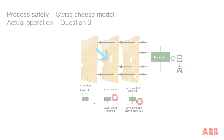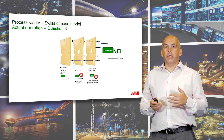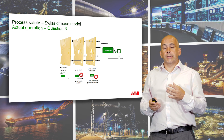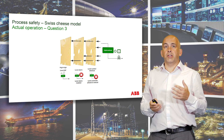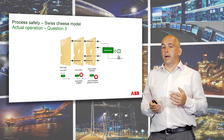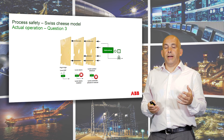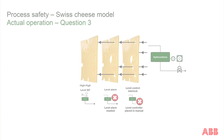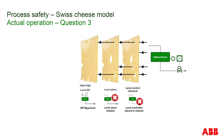Sometimes later, a maintenance person comes along to do a maintenance task called a proof test on that final barrier. To do that task, they have to bypass or override that particular safety instrumented function. As soon as that override is placed, the third barrier becomes ineffective.